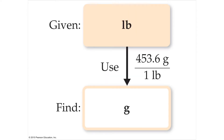Many conversion factors you won't memorize — pounds into grams, for instance, but it's in a book or on the internet. If you're given the conversion factor — say, in one pound there are so many grams — then you can convert it. You don't need to memorize everything; you just need to be able to use what you have. So let's say you're given that 453.6 grams equals one pound. How many grams are in 1.2 pounds?